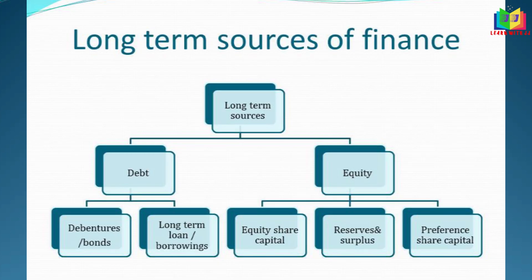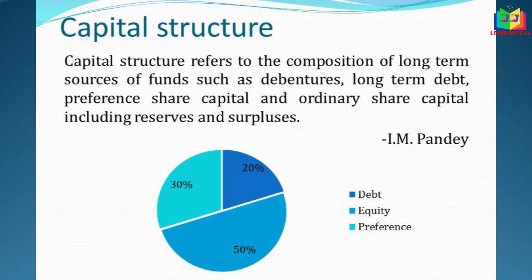Normally the fund required will be raised from long-term sources. The long-term source of finance is basically classified into debt and equity. Debt means a loan borrowed from a financial institution or bank, or it can be debentures or bonds issued by the company. Equity here refers to equity shares, retained earnings — that is reserves and surplus maintained by the company — and preference shares, which are also considered as equity.